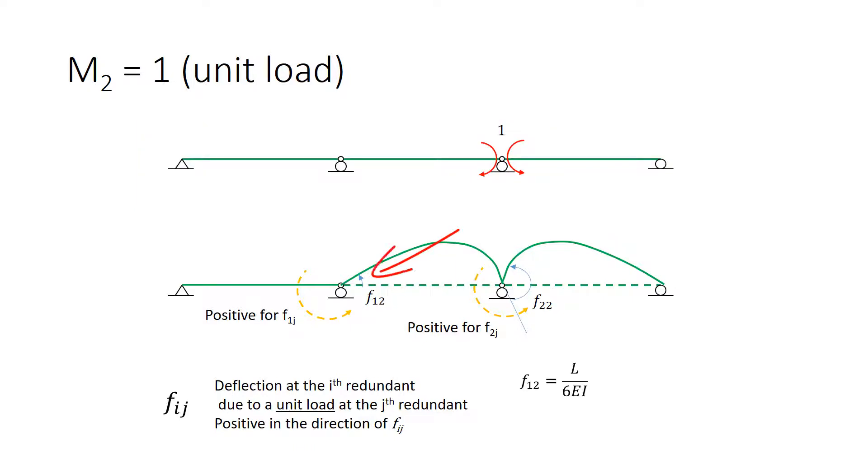The values are going to be the same. For F1-2, it's simply that angle at the far end, at the end where the moment is not applied. For F2-2, it's going to be twice the angle where the moment is applied, one for the left side of the hinge, one for the right side of the hinge. The work is exactly the same in both cases.